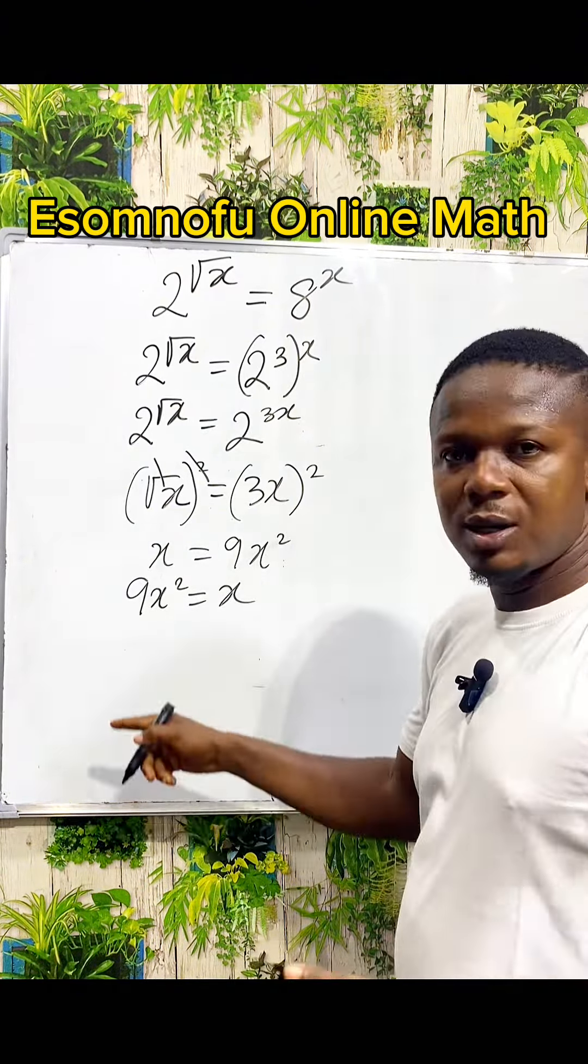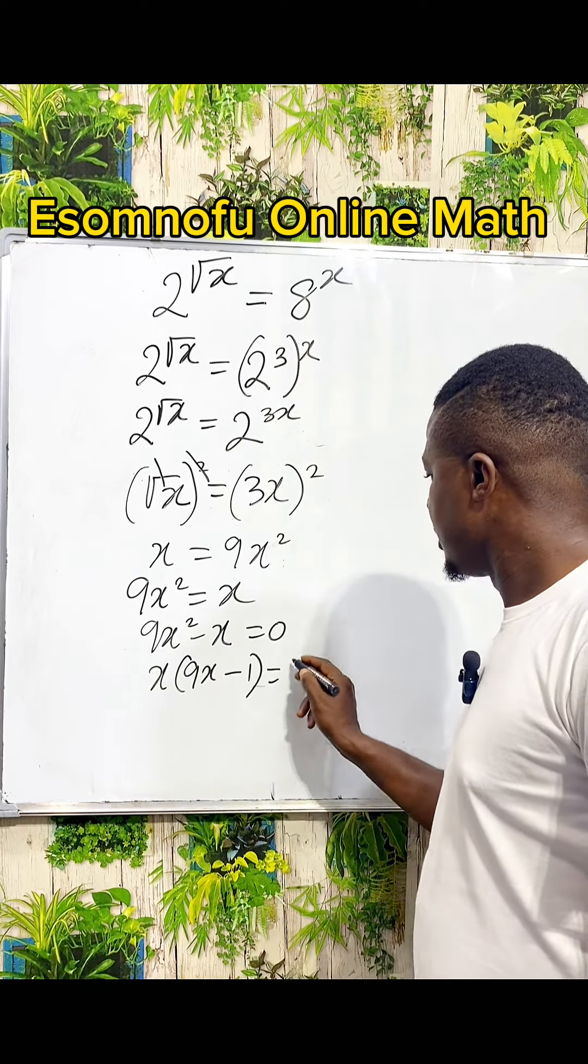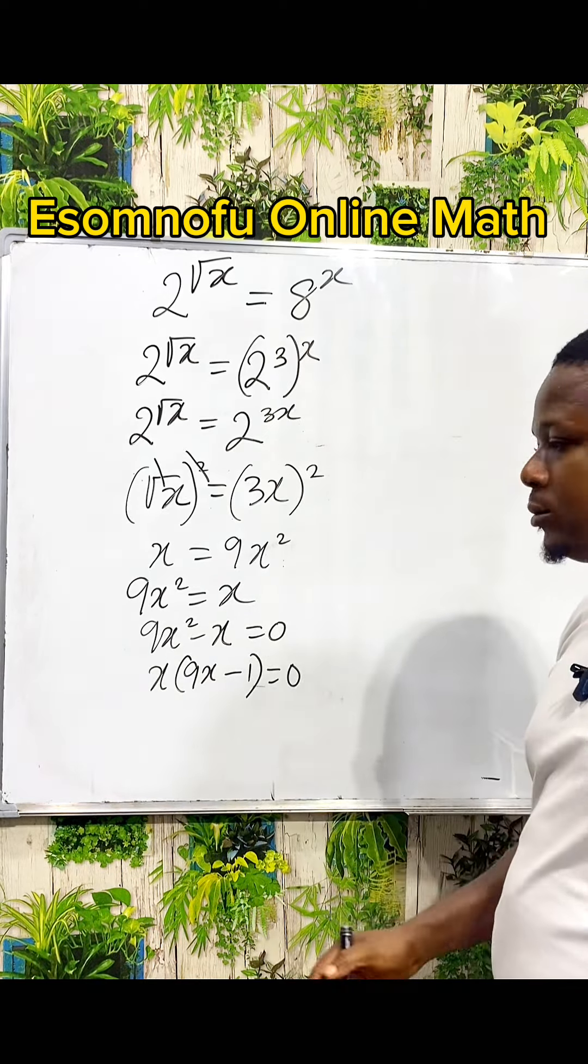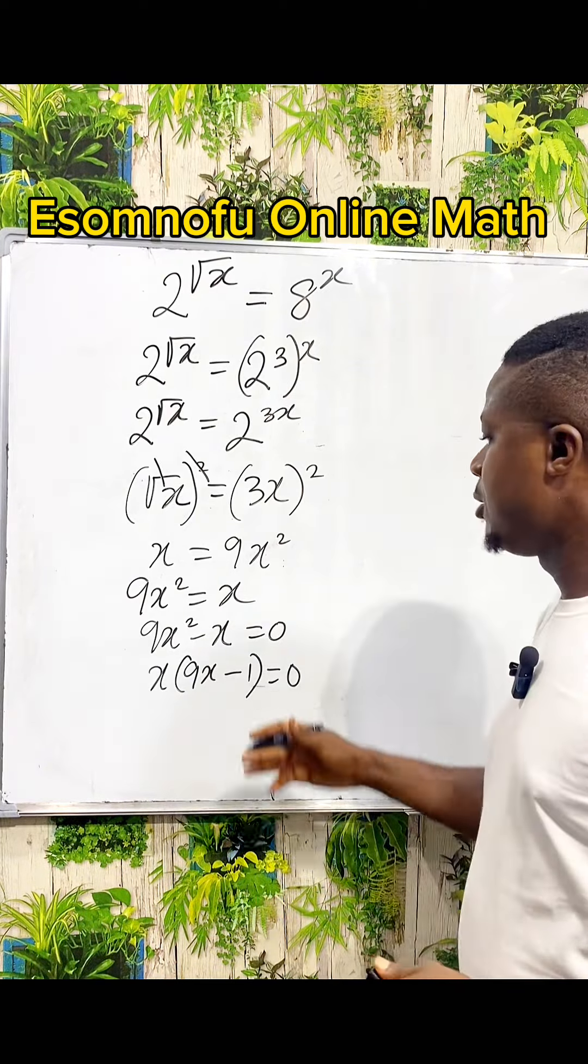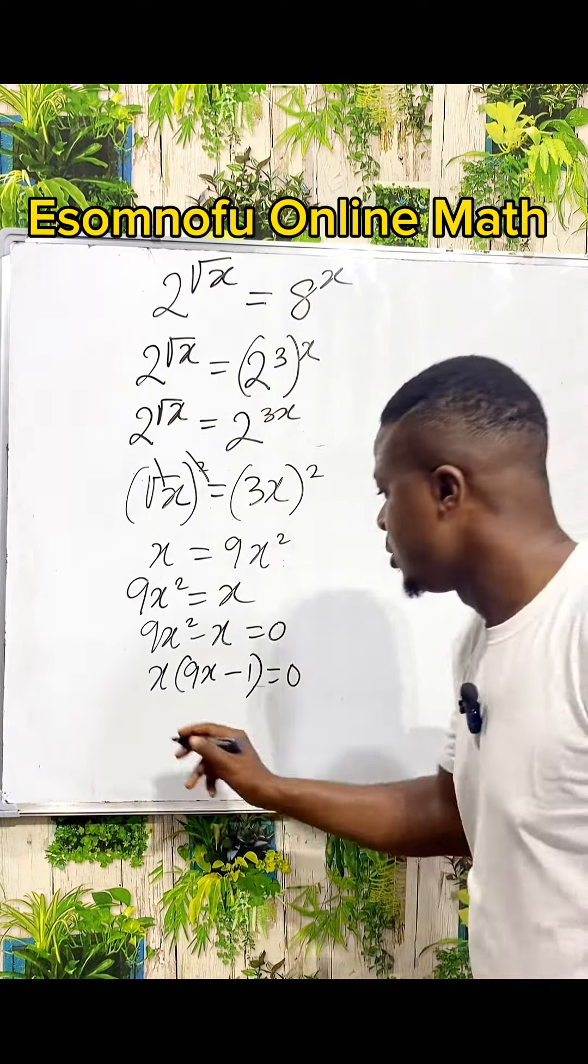Now an x is common. You can factor out x: x into, 9x² divided by x will give us 9x, x divided by x is 1, then equal to zero. When two terms are multiplied together to give you zero, you know that one of them is zero or both of them are zero.